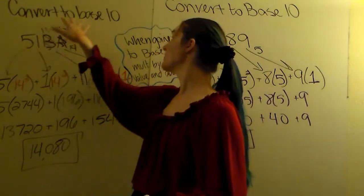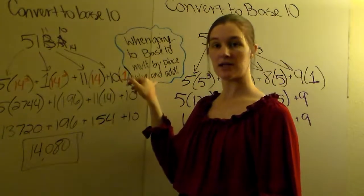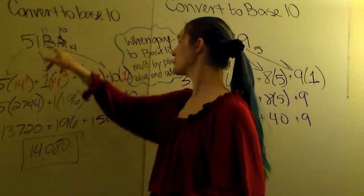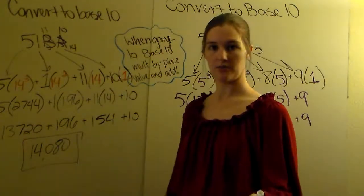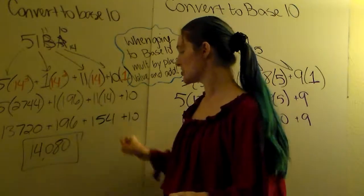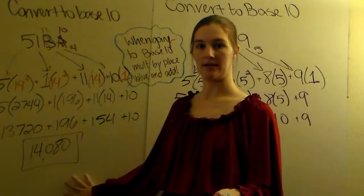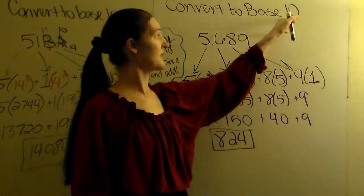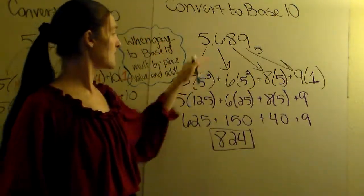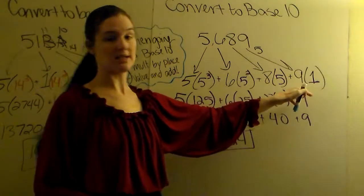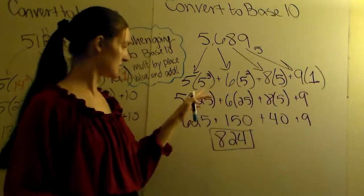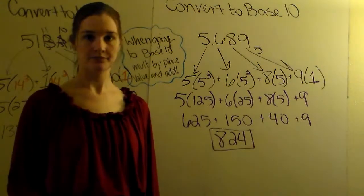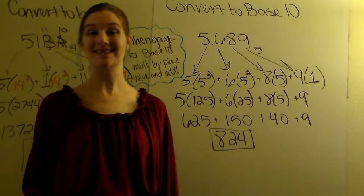So when you're converting to base 10, multiply by place values, add together. Take each number, multiply it by its respective place value. Do the multiplication, do the addition, and you're done. From base 5 to base 10, same thing. Multiply the respective numbers by their place values. Do the multiplication, do the addition to get your answer. Any questions, please email me.